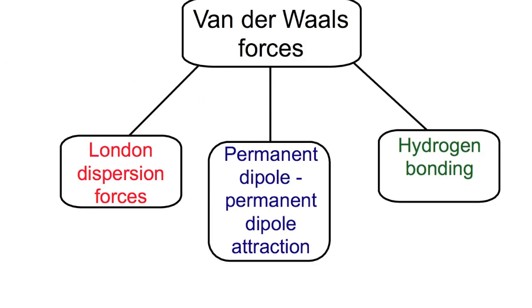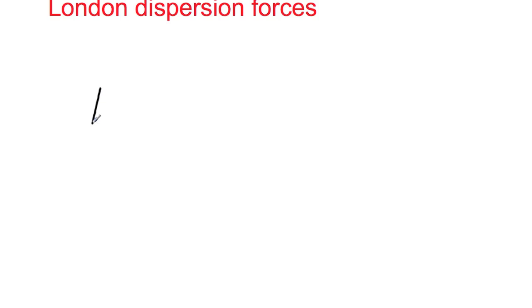Intermolecular forces can also be called van der Waals forces and come in three types: London dispersion forces, permanent dipole–permanent dipole attractions, and hydrogen bonding. All three types are attractions between positive and negative charges that occur within atoms or molecules. The weakest form is London dispersion forces, which help explain some properties of the noble gases.